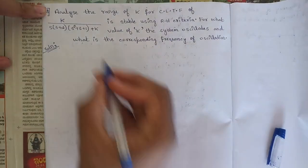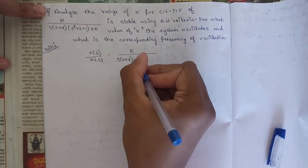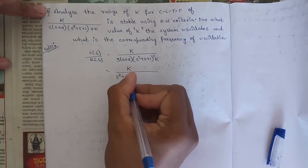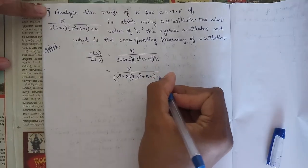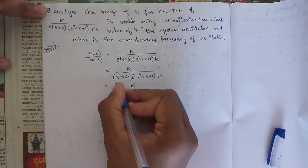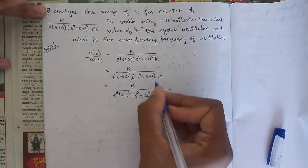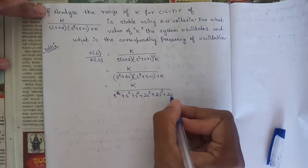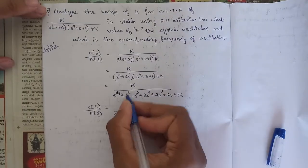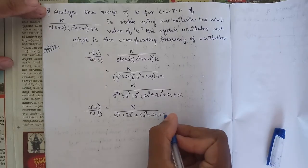The transfer function C(s)/R(s) equals k divided by s(s+2)(s²+s+1)+k. Multiplying out the denominator: (s²+2s)(s²+s+1) gives s⁴+s³+s²+2s³+2s²+2s, so the denominator becomes s⁴+3s³+3s²+2s.